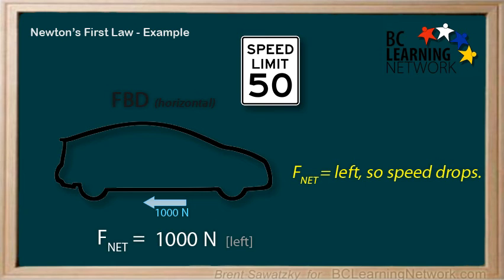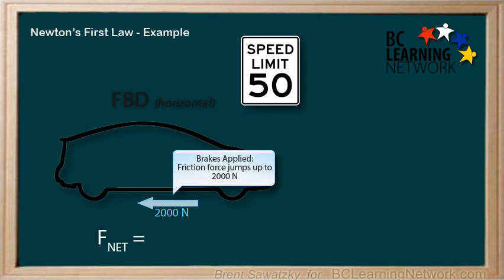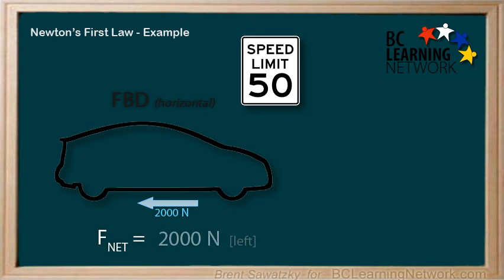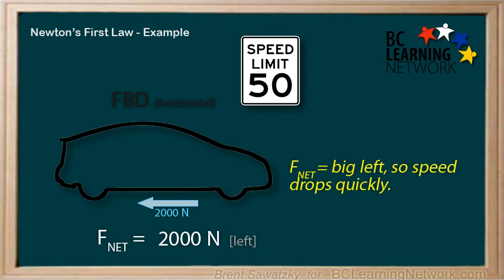As you get closer, you realize you're still going 30 kilometers per hour and your speed is dropping slowly. So we need to drop that speed more quickly. What are you going to do to get a bigger frictional force? Well, if we hit the brakes, it adds an extra large internal friction. You suddenly have a frictional force of 2,000 Newtons to the left. Now our F-Net is 2,000 Newtons to the left, and this will slow down the car much more quickly.